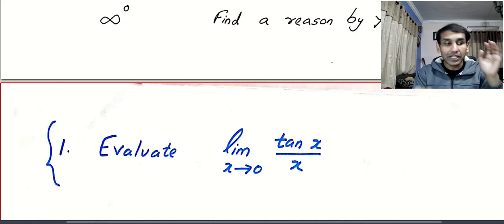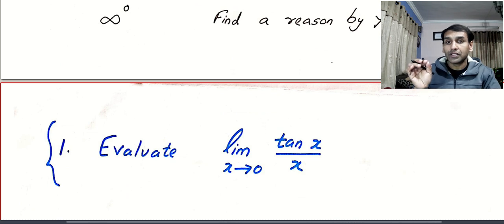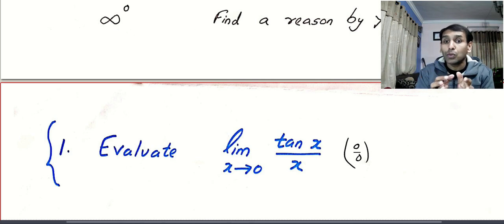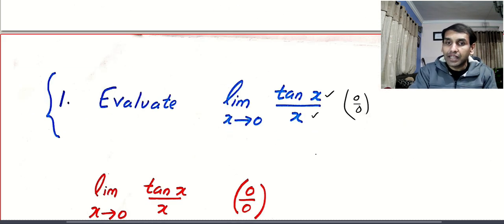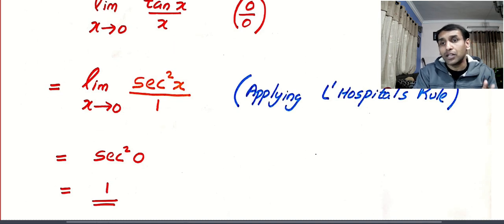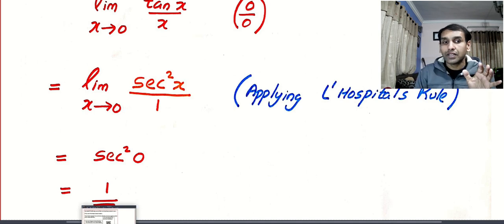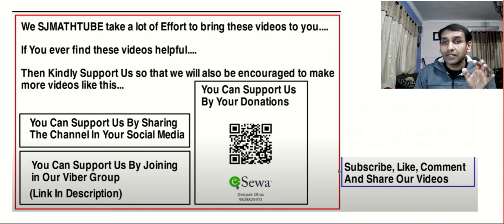To recap: when you have 0 divided by 0, you apply L'Hôpital's rule — differentiate the numerator and denominator separately and then apply the limits. I'll be back with more videos and problems on this topic in lesson number 5. Till we meet, bye!